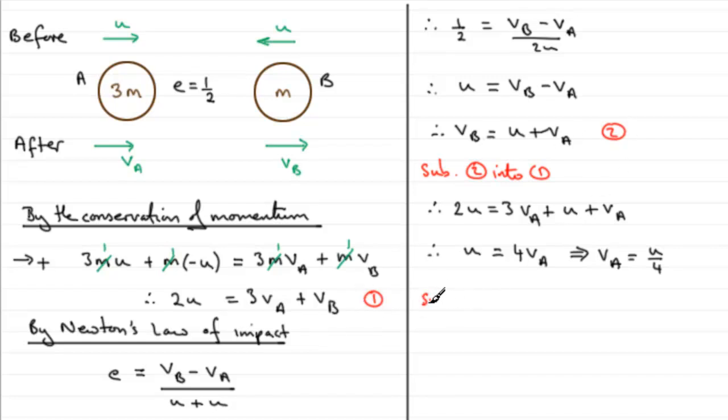If we do that, we end up with VB equals u plus VA, which is u over 4, and we end up with 1 and a quarter u, or you could write it as a top heavy fraction. Therefore, the final velocity of B equals 5u over 4. So we have our two final velocities: the final velocity of A being u over 4 and the final velocity of B being 5u over 4.